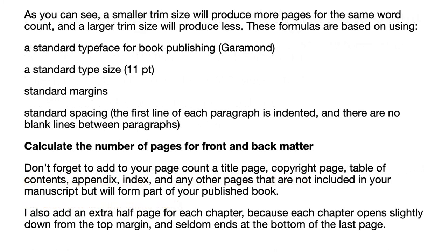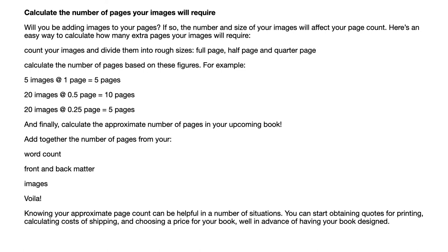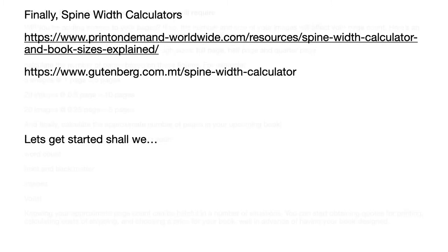We can now set the spine width, and you can see the calculation on screen — standard typeface, 11 point, standard margins and spacing. Don't forget you'll need to add title pages, copyright, table of contents, and other pages to your total. Add together the pages from your word count, front and back matter, and any images. Online calculators are available — KDP have them, Lulu have them, and just about anybody that prints books has one on their website.